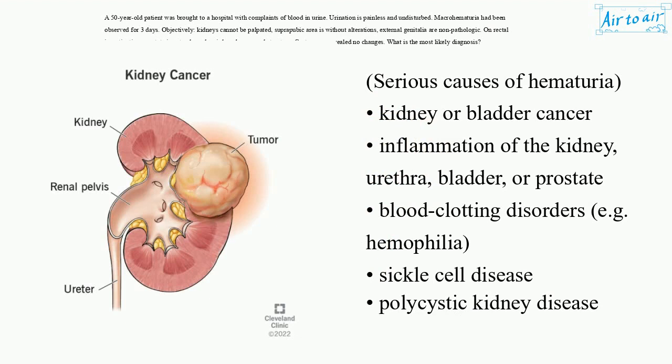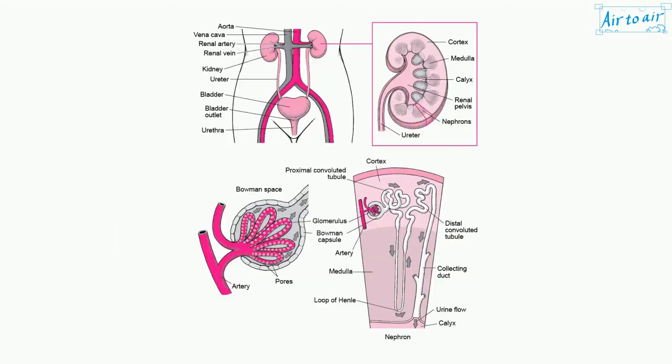Serious causes of hematuria include kidney or bladder cancer, inflammation of the kidney, urethra, bladder, or prostate, blood clotting disorders (e.g. hemophilia, sickle cell disease), and polycystic kidney disease.